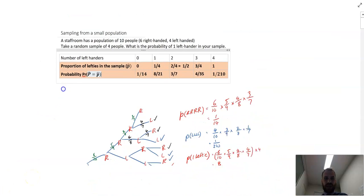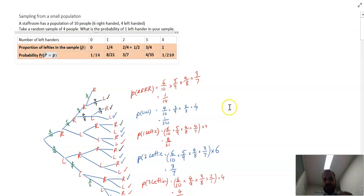That was sampling from a small population. You can see where we sample from a small population, we've got to do it without replacement. We've got to take people away. And then as we move through that tree diagram, the denominator changes. When we start sampling from a larger population in a future video, things are going to change a little bit. It's going to get a little easier.